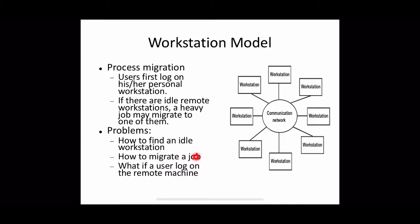The third issue is: what happens to the remote process if a user logs onto that remote machine after we have assigned jobs to it? These are the main issues. The first two — finding an idle workstation and process migration — will be discussed later.